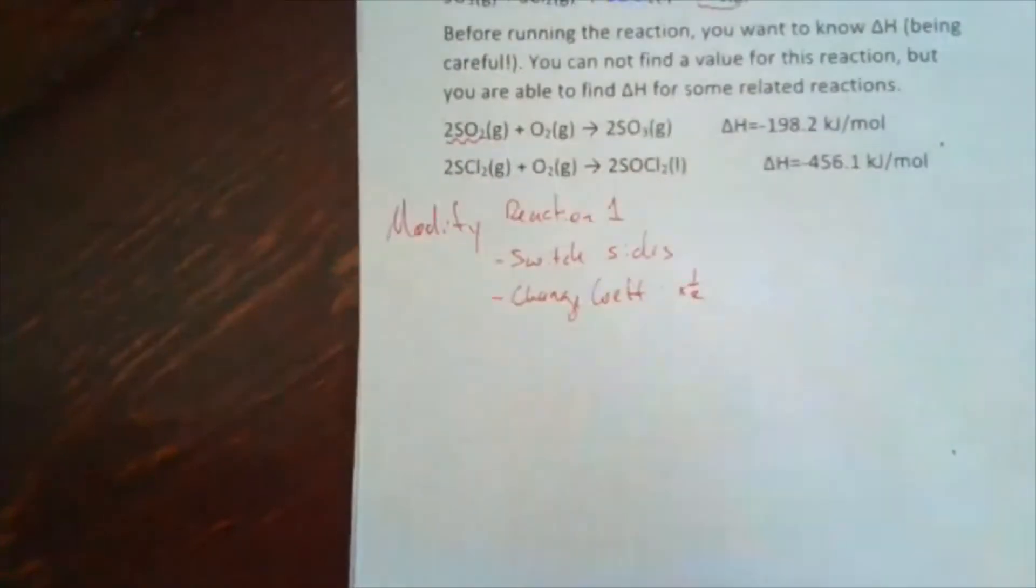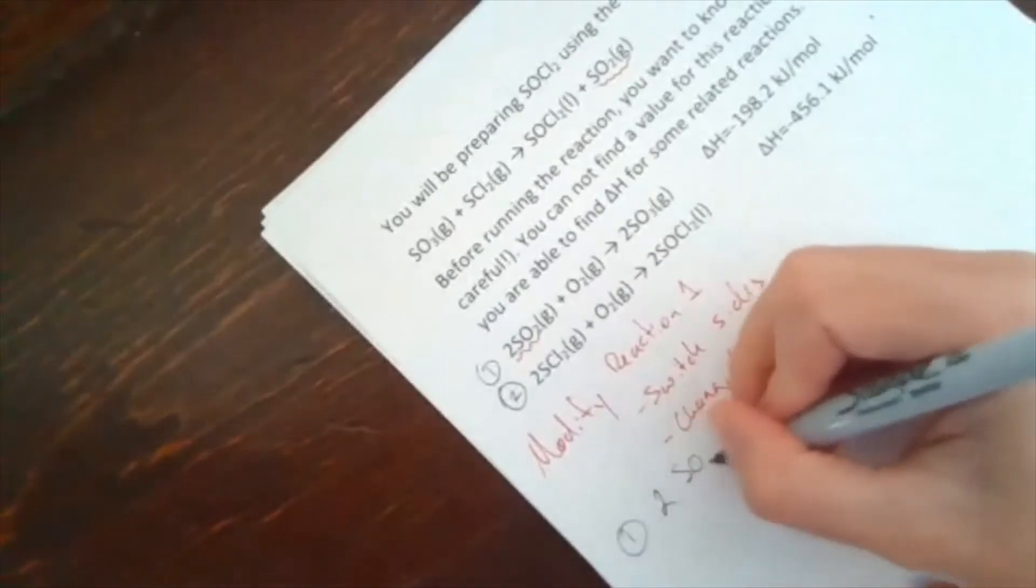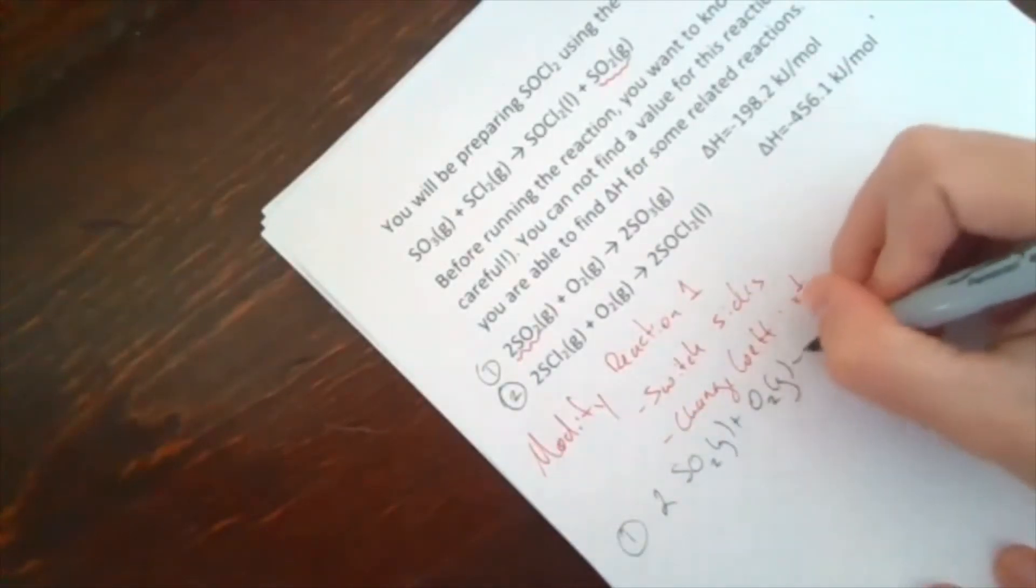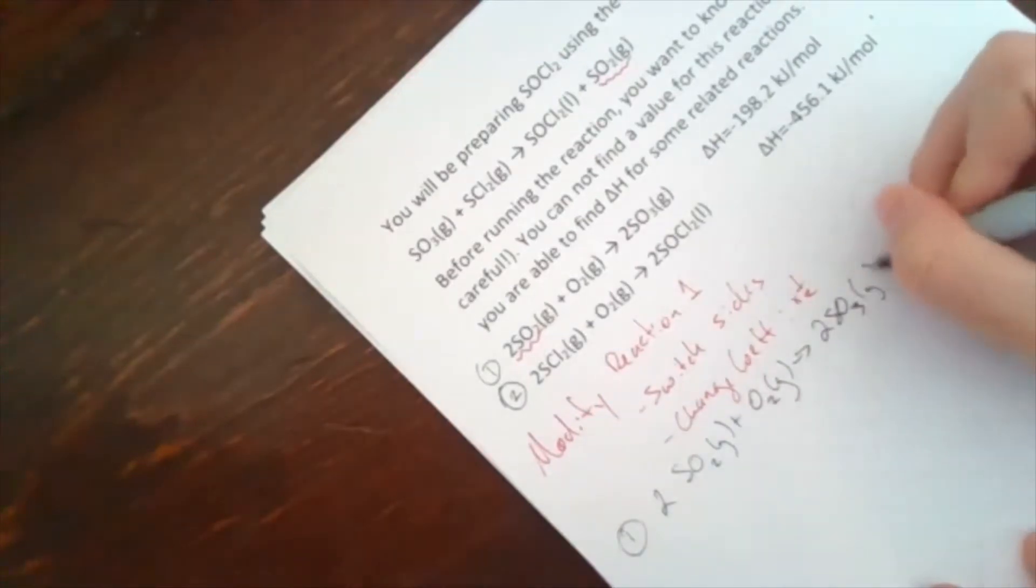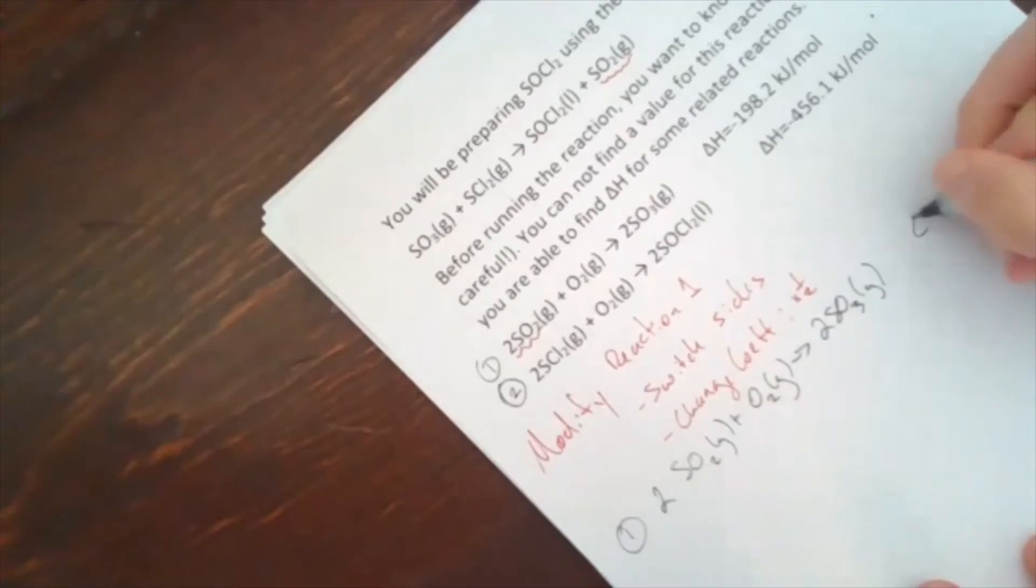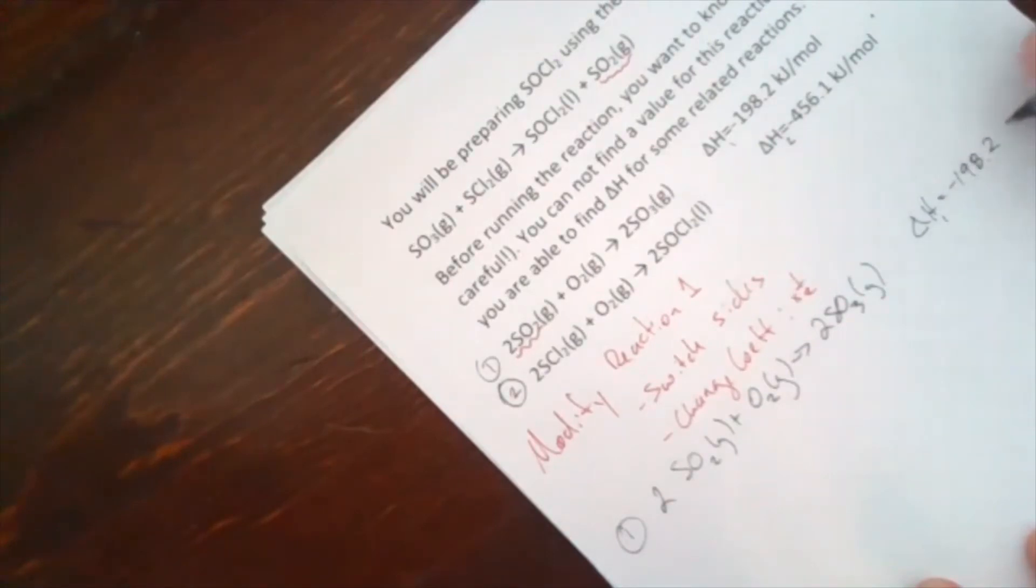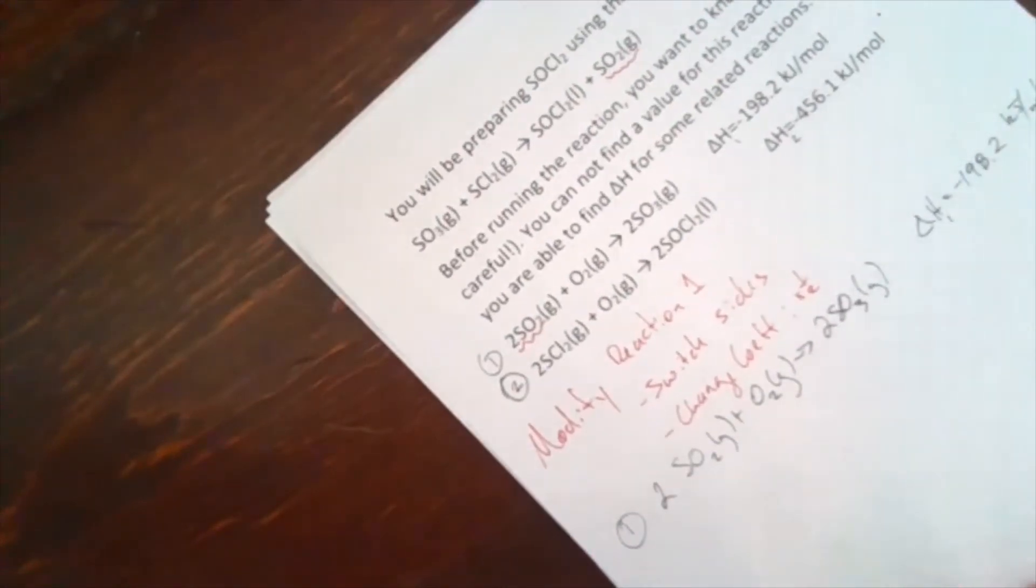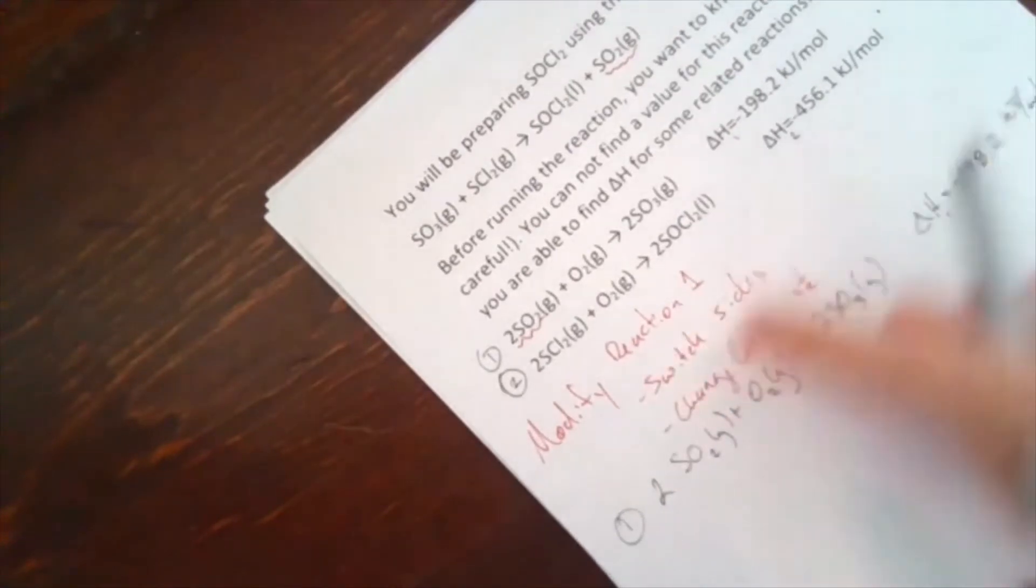And what I need is for them to be one half. So if I look, this reaction, which we'll call one, call that two. So for one, it was 2SO2 gas plus O2 gas becomes 2SO3 gas. And we know in that case that delta H of reaction one is negative 198.2 kilojoules per mole.